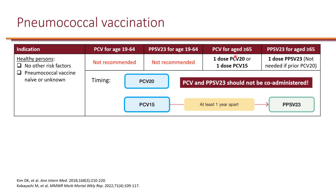Once individuals turn 65, they are at risk of developing pneumonia, meningitis, and other infections due to Streptococcus pneumoniae. It is recommended for people age 65 to receive one dose of PCV20, or they may choose one dose of PCV15. If someone chooses PCV15, they should also get a dose of PPSV23 at least one year later. Importantly, PCV and PPSV vaccines should not be administered at the same time — a gap of at least one year is recommended.